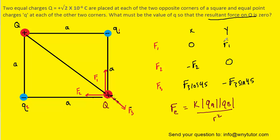So we would have K multiplied by lowercase q multiplied by uppercase Q divided by the distance between them squared. Remember, we call the distance between them A. So we'll have A squared.